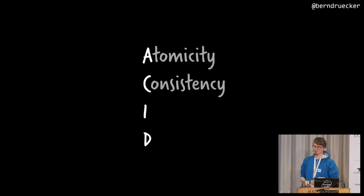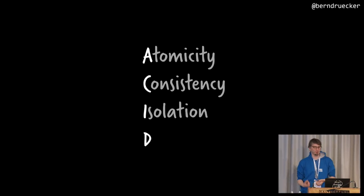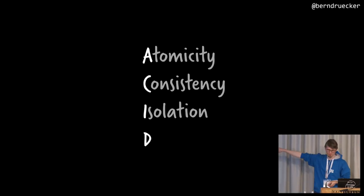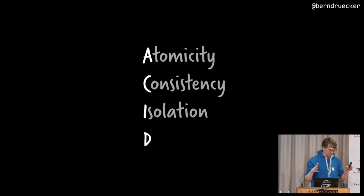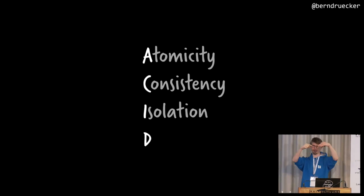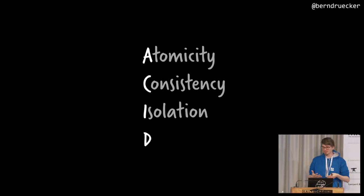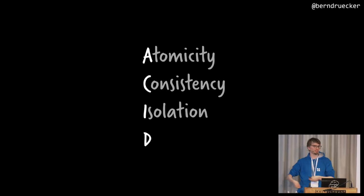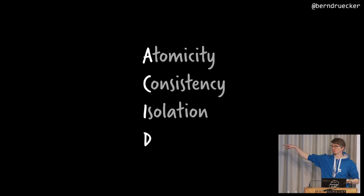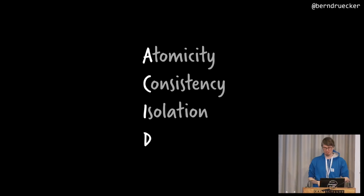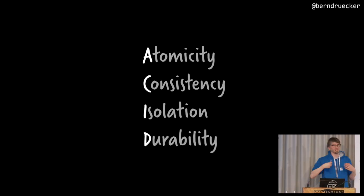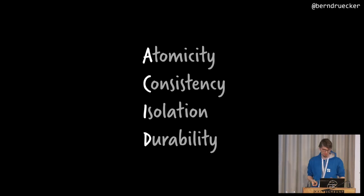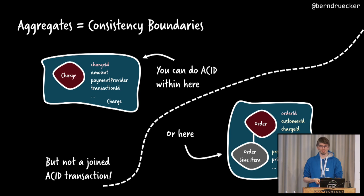I is about isolation, and that's actually the important property we want to focus on today. It basically means if two different threads are looking at the same data, they see the data only in a consistent state — they don't see in-between states. You know that from isolation levels like read committed. And durable — that's what you should have from a database. Whatever you do there, it's durable, it's saved and stored for later.